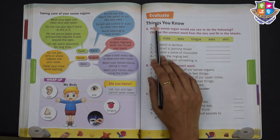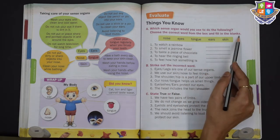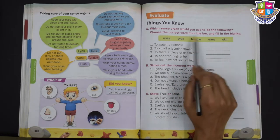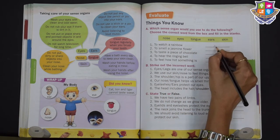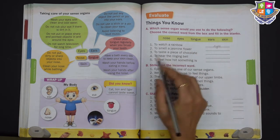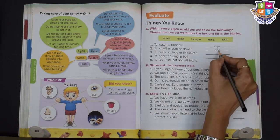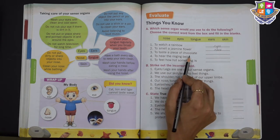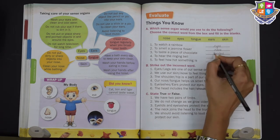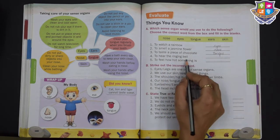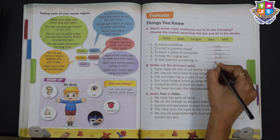Now we are going to evaluate. Which sense organ would you use to do the following? Choose the correct word from the box and fill in the blanks. To watch a rainbow — eyes. To smell a jasmine flower — nose. To taste a piece of chocolate — tongue. To hear the ringing bell — ears. To feel how hot something is — skin.